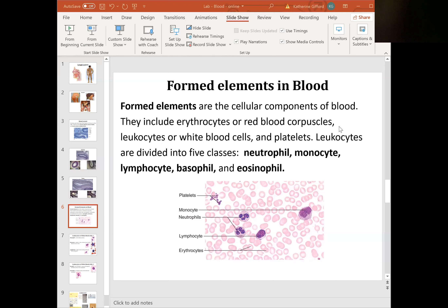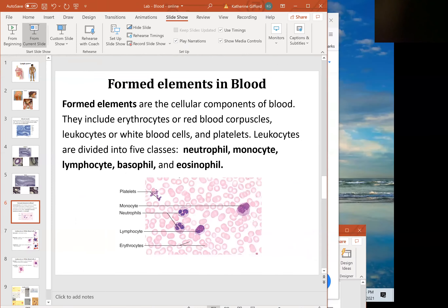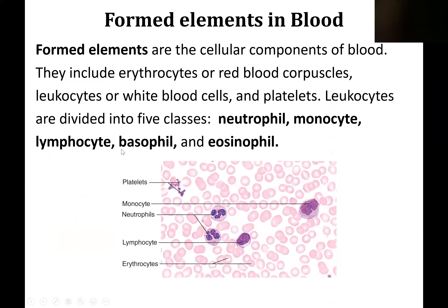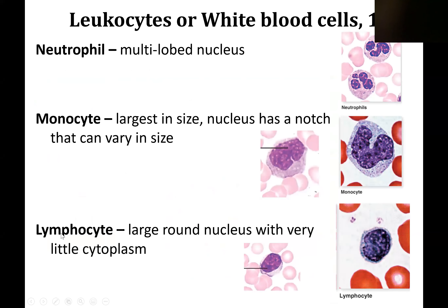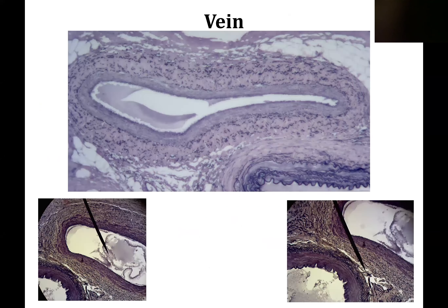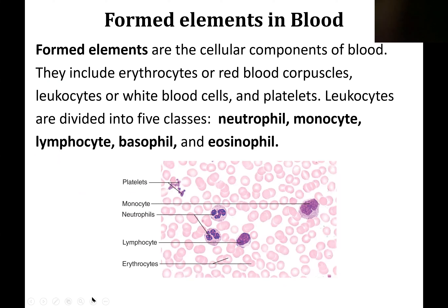This is the recording for part A of the blood lab. The formed elements of blood are the cellular components of blood. They include the erythrocytes, the leukocytes, and the platelets.